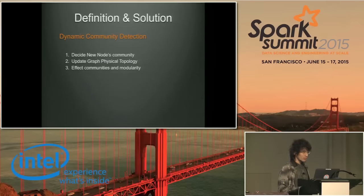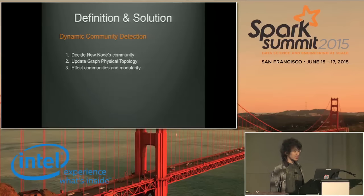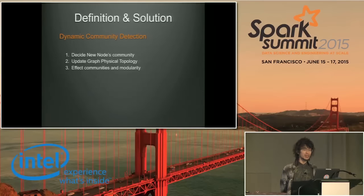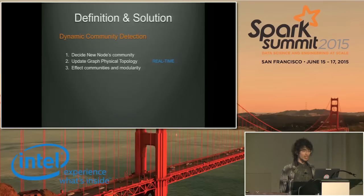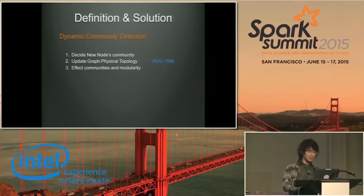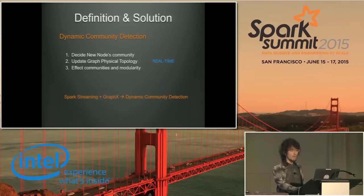Let me give the definition for dynamic community detection first. In our view, it consists of three key points. First, it should decide the new node's community in seconds. Second, it should update the graph topology. And third, it should affect the model and later coming nodes. All of these need to happen in real time. Our solution is using a unified Spark model — Spark Streaming and GraphX — to make the dynamic graph model for community detection.